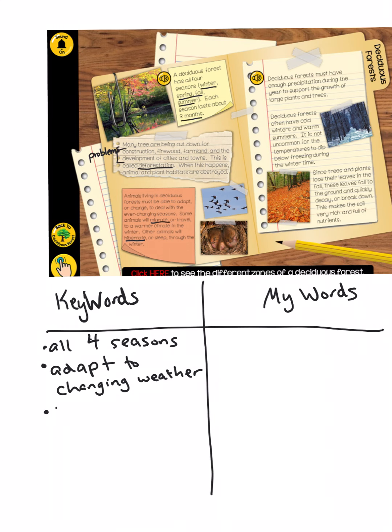I've learned that some animals might migrate or travel during the winter, and others might hibernate, which means take a long sleep during the cold winter months. I've also learned that there are serious problems facing deciduous forests, and the biggest problem is something called deforestation, which is when people cut down the trees for their own purposes, such as building cities and towns, using the wood for firewood, or needing the land for farmland.